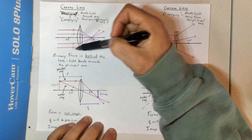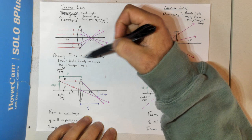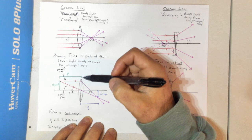For a convex lens, the primary focus is behind the lens. As light comes in, it's going to hit behind it — we're bending that light towards it. So light is bent towards the principal axis and meets at the primary focus.